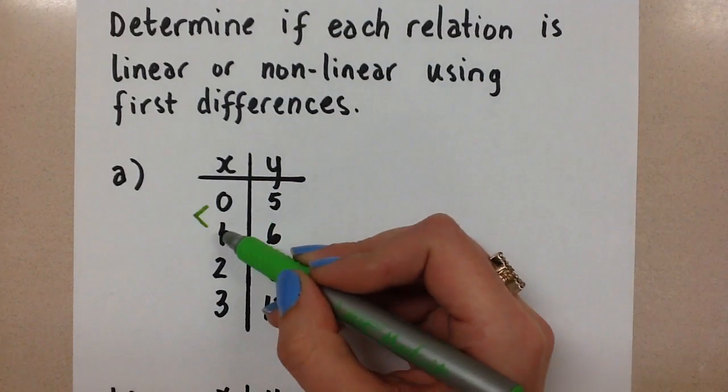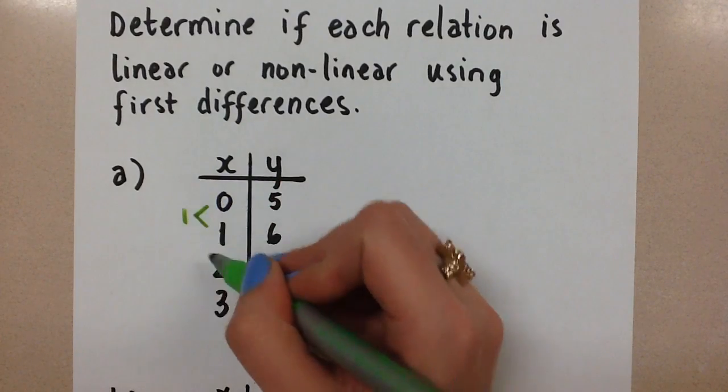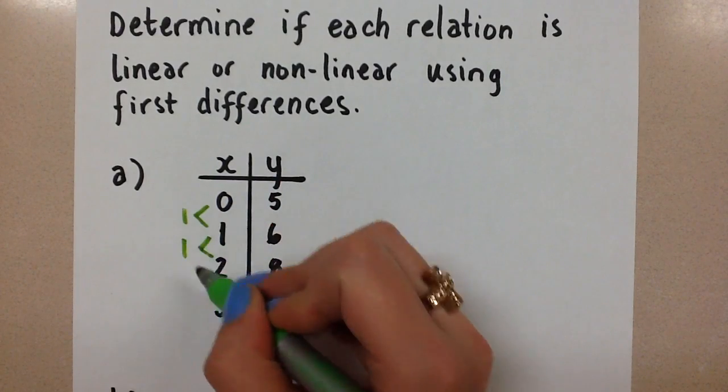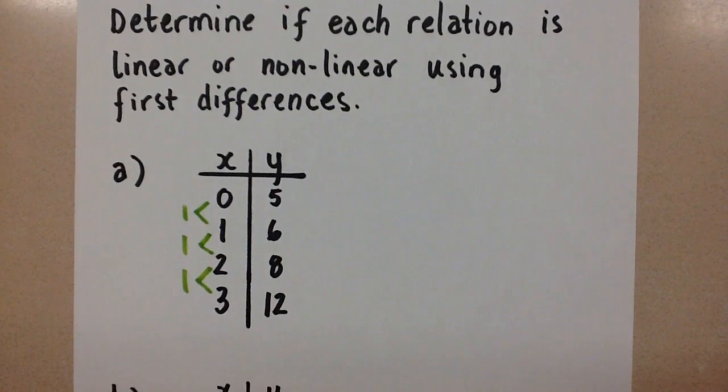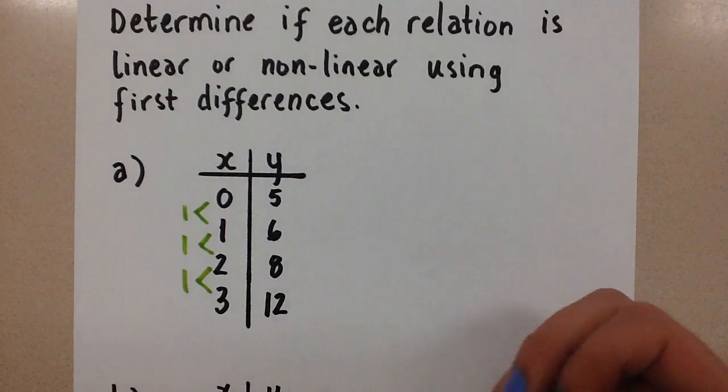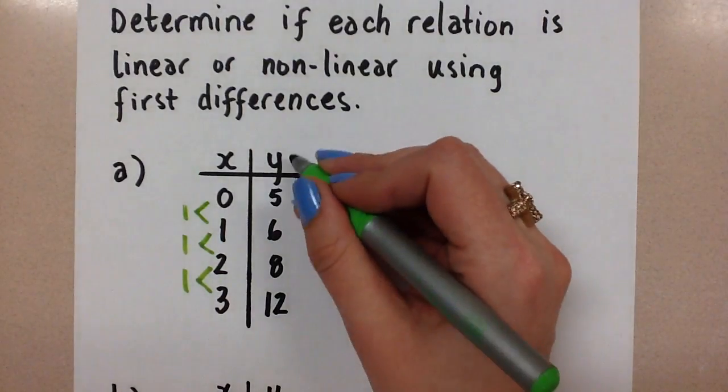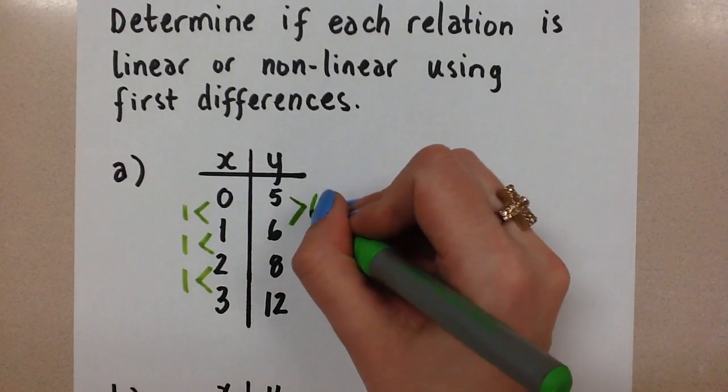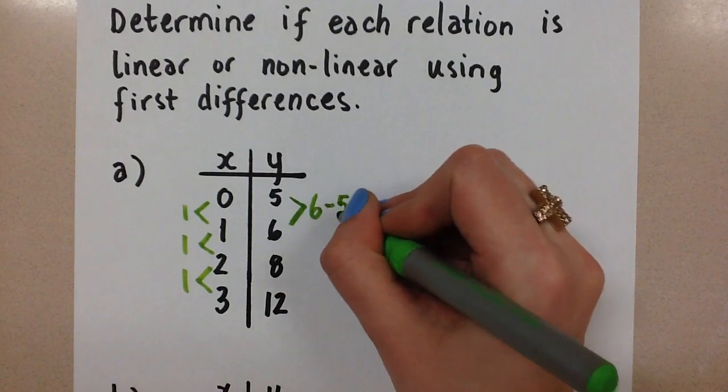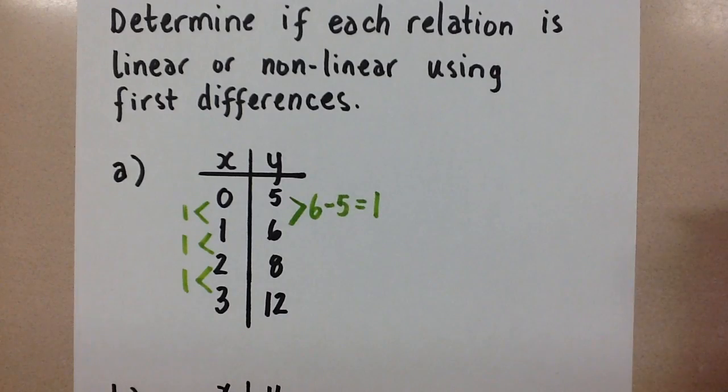So here we see that it goes up by 1, and it goes up by 1, and it goes up by 1. And so we're good to proceed with our first differences to see if this is linear or non-linear. So we compare the y values. Take your first two y values, and we're going to subtract them. 6 minus 5 equals 1.